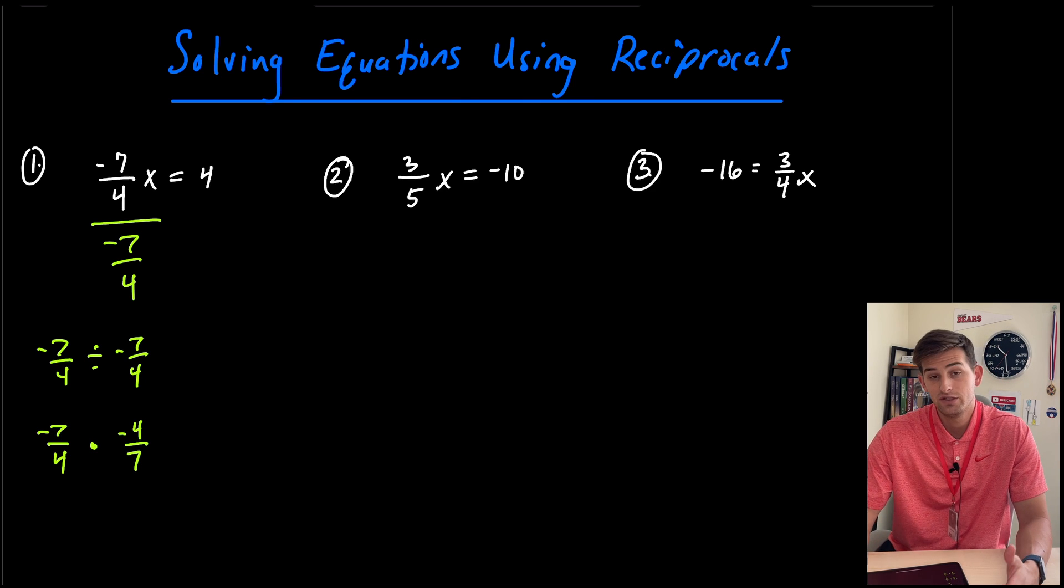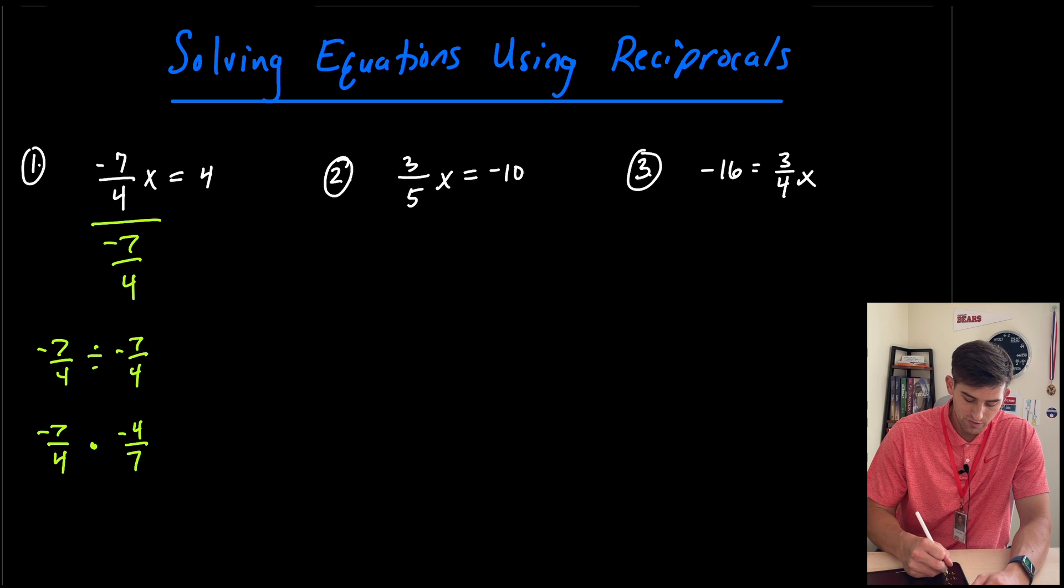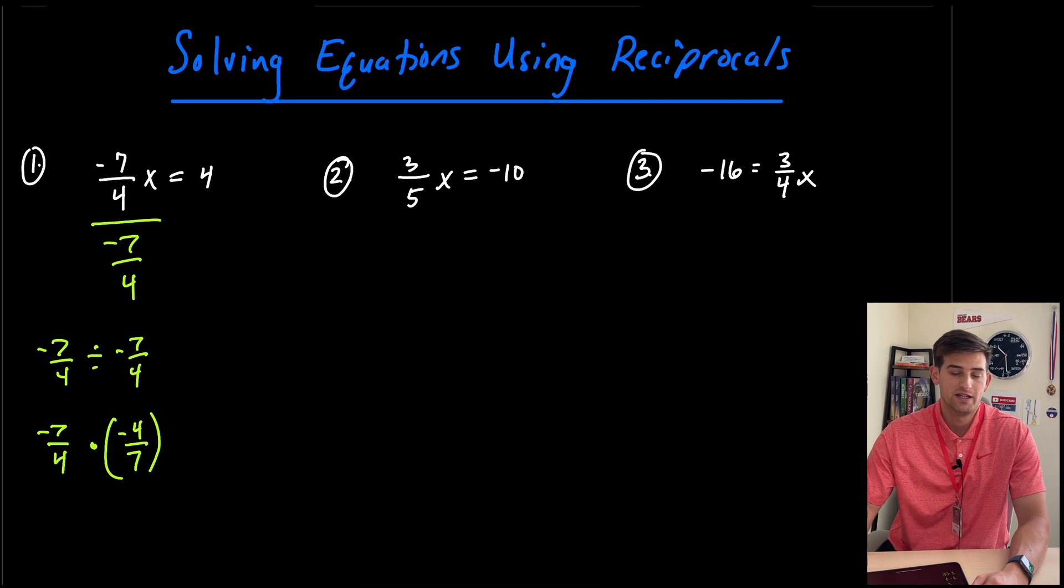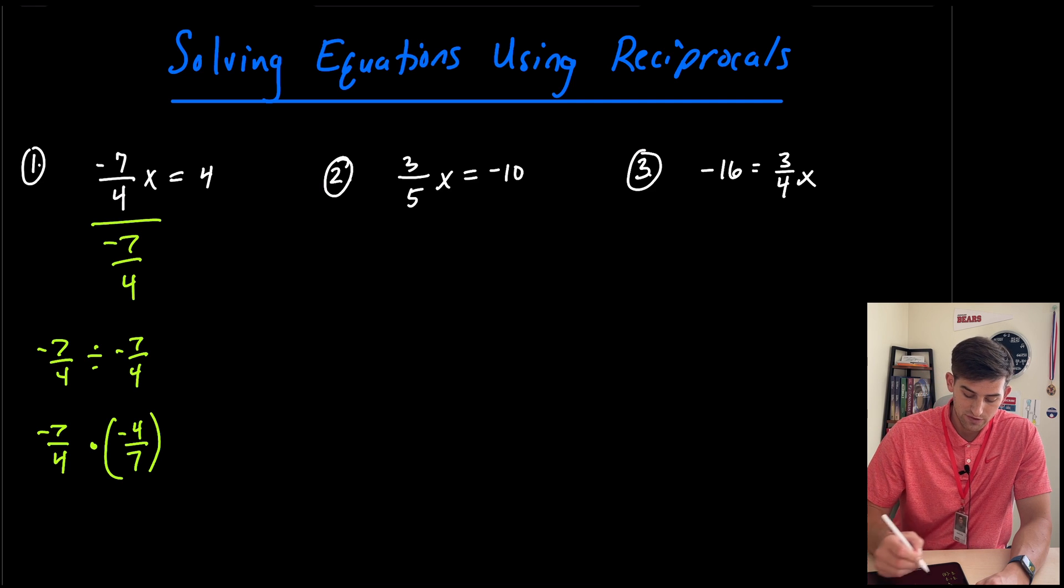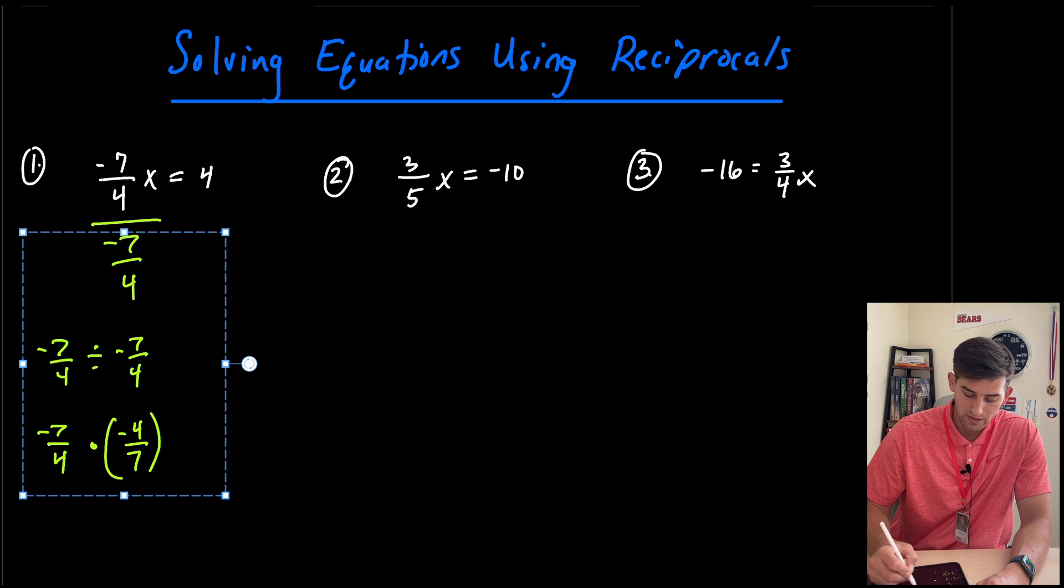So what are we actually doing when we're dividing by negative seven over four? We're multiplying by the reciprocal of negative seven over four, which would be negative four over seven. So that's the idea there.